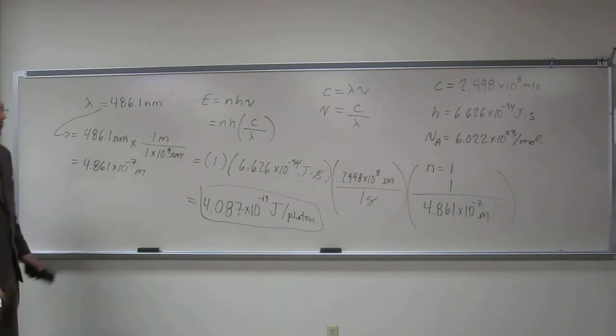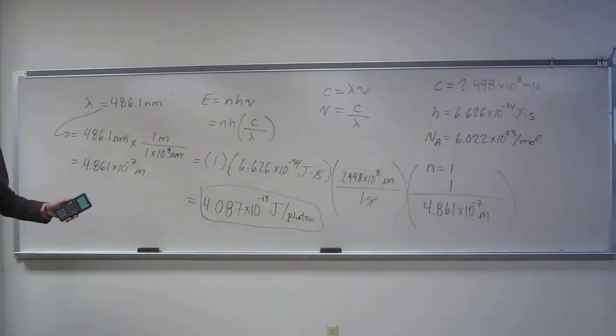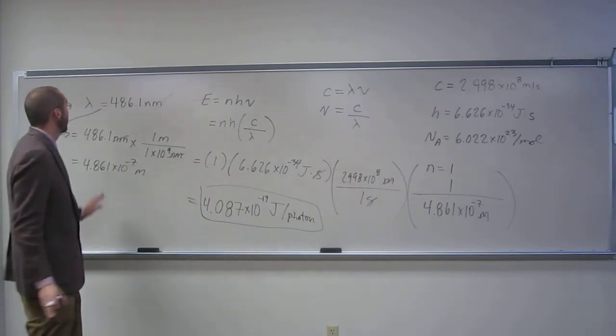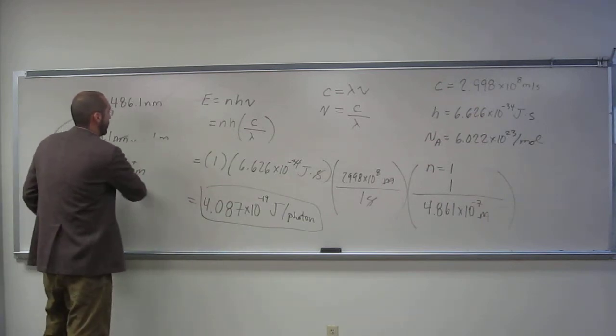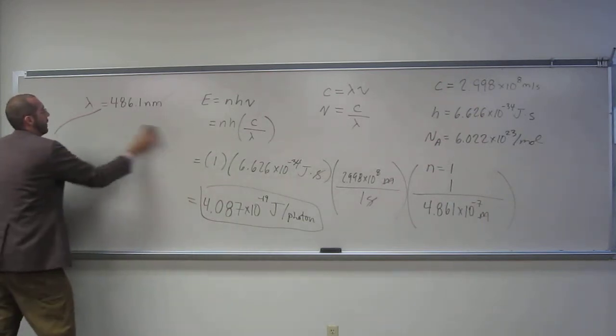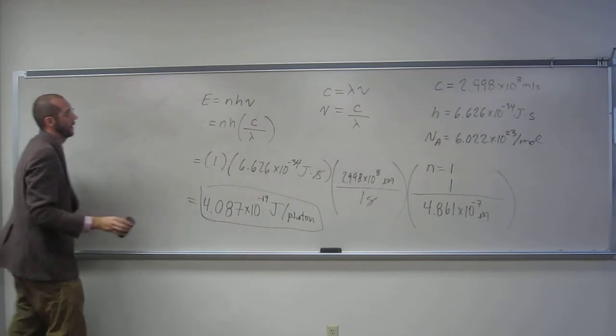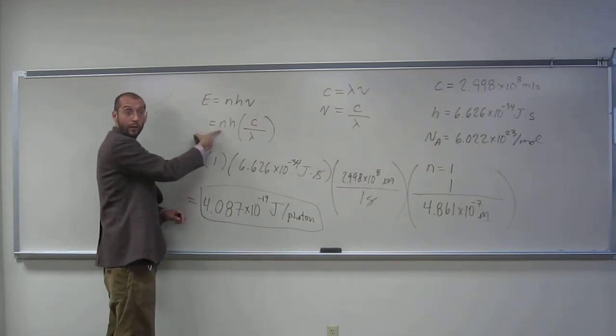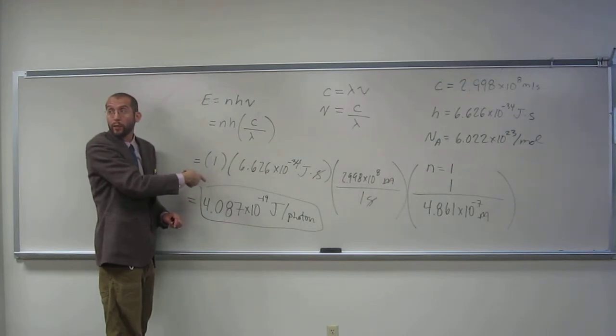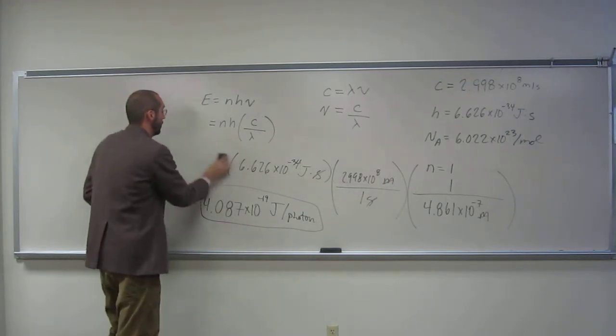So that would be for one photon, but for a mole of photons, right? I'm going to erase everything except, because we're running short on time. I'm just going to redo this problem, instead of n being 1, it's n is 6.022 times 10 to the 23rd per mole.